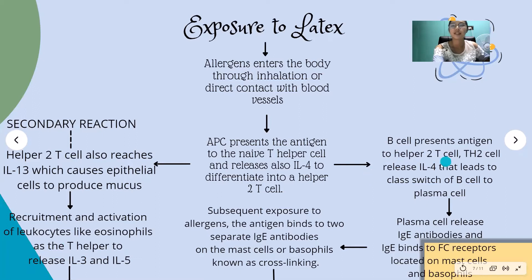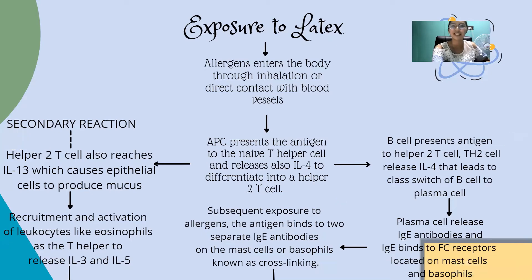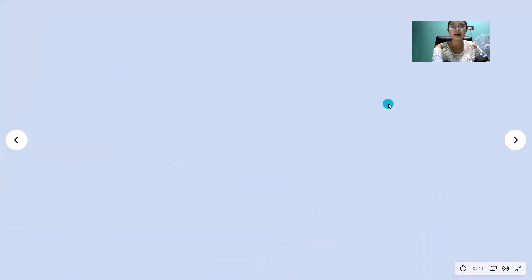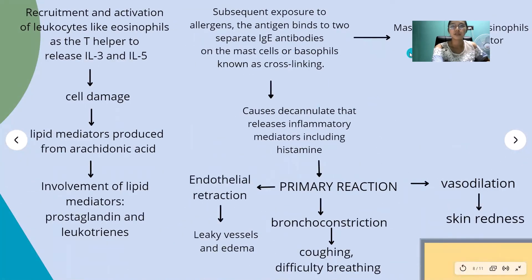The B cell presents the antigen to T-helper 2 cells. These T-helper 2 cells release interleukin-4, leading to a class switch of B cells to plasma cells. The plasma cells release immunoglobulin E antibodies. IgE then binds to Fc receptors located on mast cells and basophils. With subsequent exposure to the allergen, the antigen binds to two separate IgE antibodies on the mast cells or basophils, a process known as cross-linking.